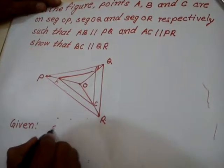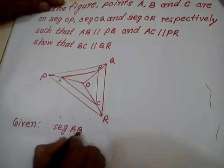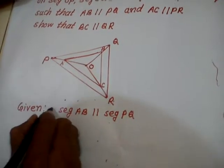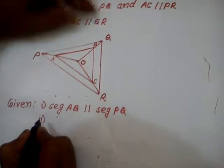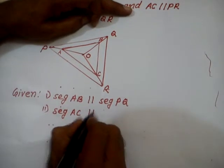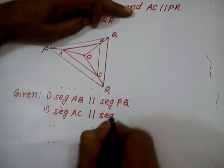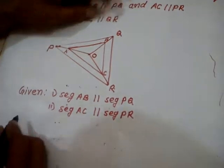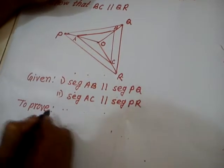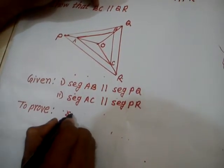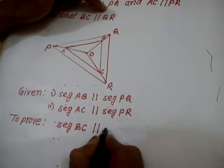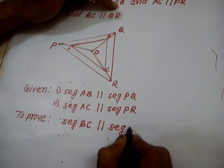Segment AB parallel to segment PQ. And second one, what is given to us? Second, segment AC parallel to segment PR. This is given to us. What we have to prove? To prove, what we have to prove? Segment BC parallel to segment QR.